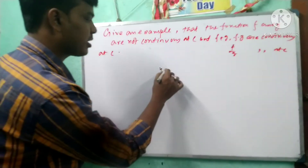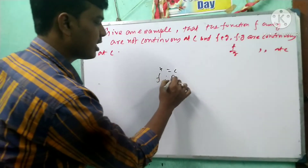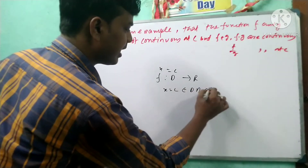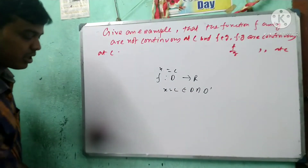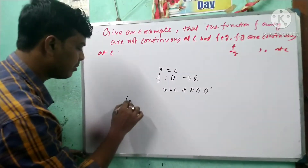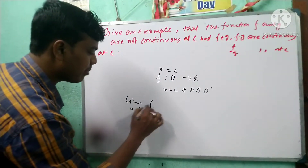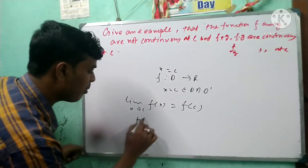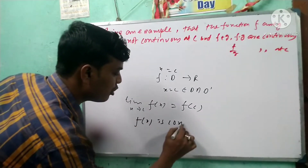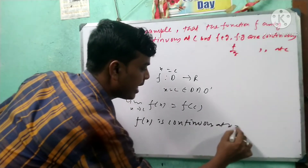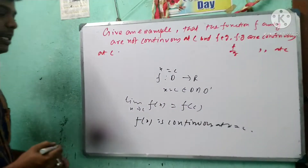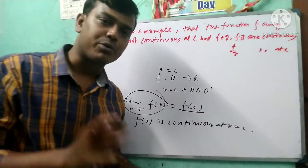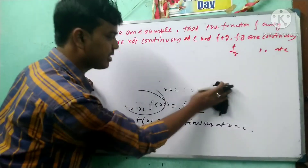That is, for a function f: D → R, where x approaches the point c, and c belongs to D intersect D', then the limit as x tends to c of f(x) equals f(c). This means f(x) is continuous at x = c. This is the limit definition of a continuous function.